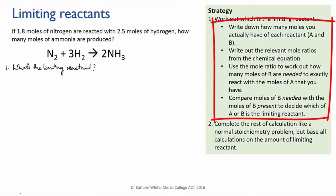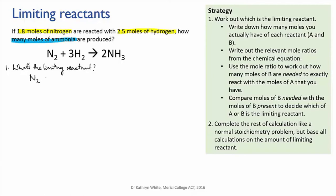I've sketched the strategy for doing this here, and I'm going to work through it. First, let's highlight how many moles of each reactant we actually have present. So that's 1.8 moles of nitrogen and 2.5 moles of hydrogen. Next, we'll write out the relevant mole ratio from the equation. That's 1 mole of nitrogen reacts exactly with 3 moles of hydrogen.